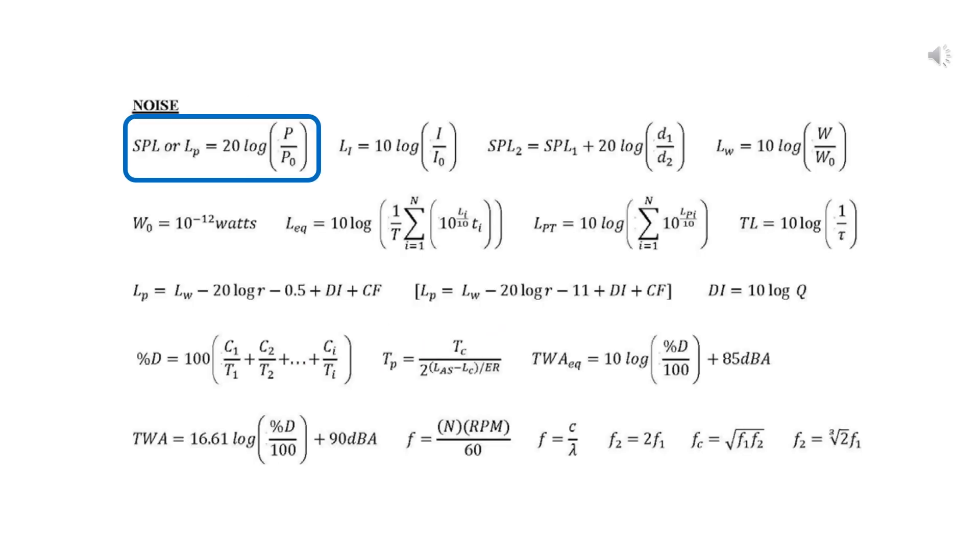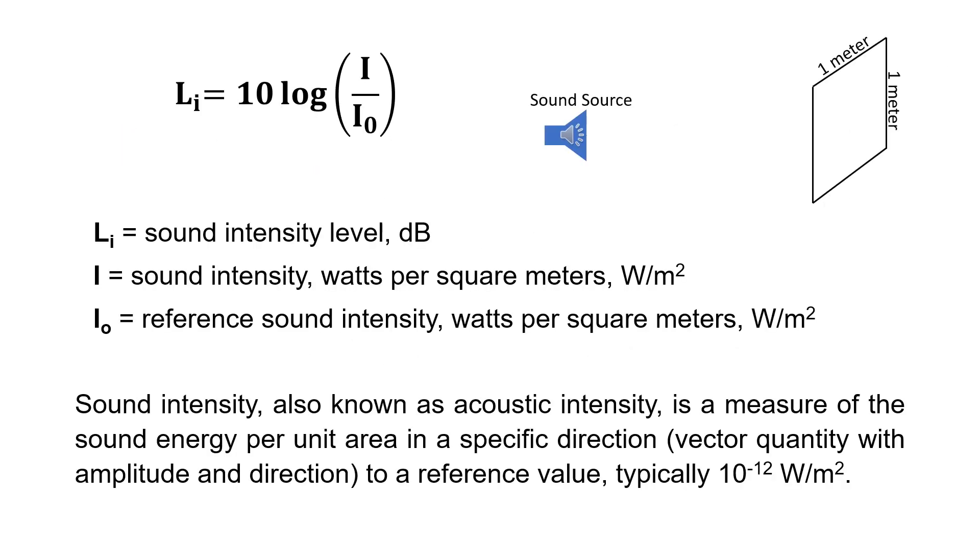So now let's go to the second equation. In this equation, the sound intensity, also known as acoustic intensity, is a measure of the sound energy per unit area in a specific direction. It is a vector quantity, with amplitude and direction, to a reference value, which is typically 10 to the power minus 12 watts per square meter. Do not confuse sound pressure level with sound intensity. Sound pressure level quantifies the loudness of the sound, while sound intensity provides information about the energy flow and the direction of the sound wave.